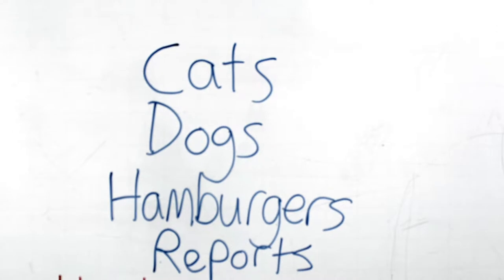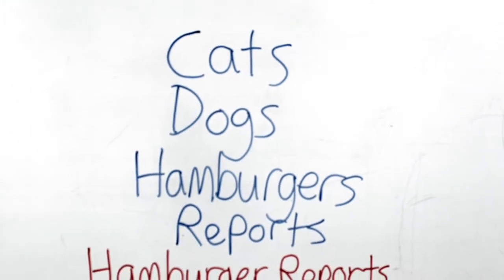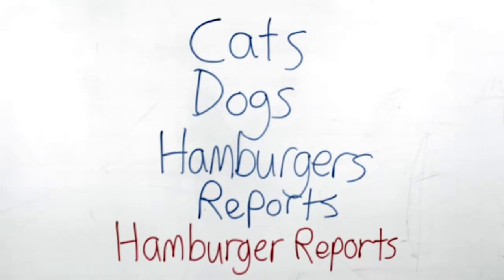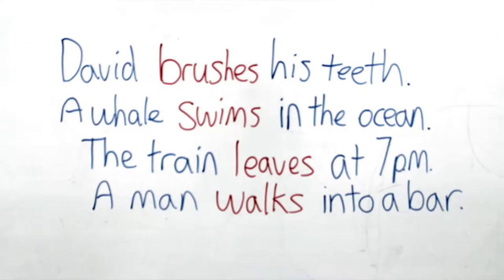S endings are very important. If you want to describe more than one of anything — called plural — you're going to need S endings like cats, dogs, hamburgers, reports, hamburger reports. We even add an S at the end of some verbs to show simple present tense. We use simple present tense to describe things like habits, facts, future scheduled events, or just to tell stories. Examples: David brushes his teeth. A whale swims in the ocean. The train leaves at 7 pm. A man walks into a bar.